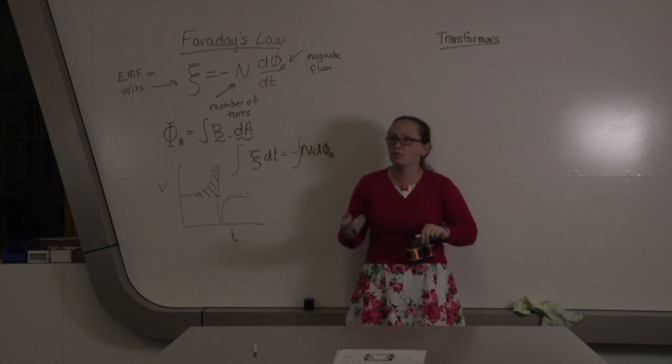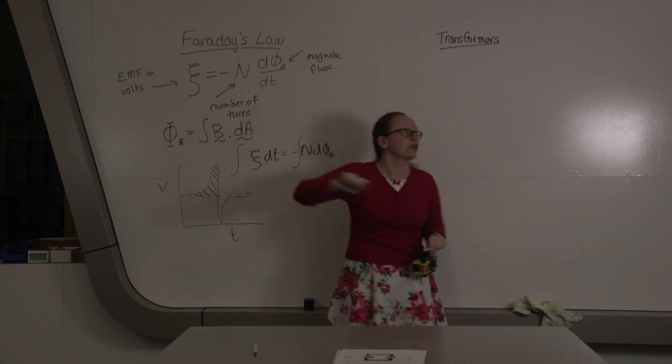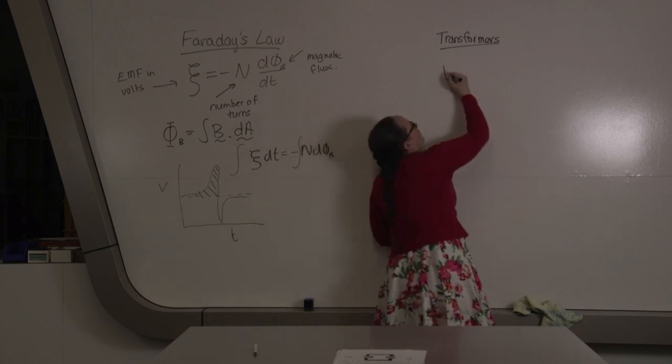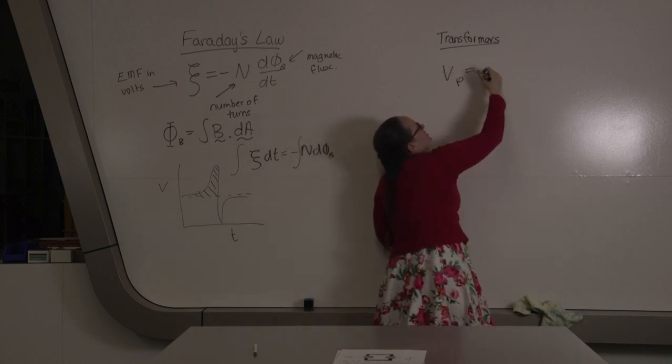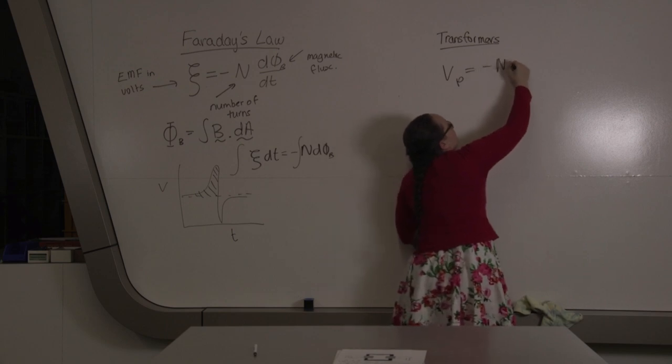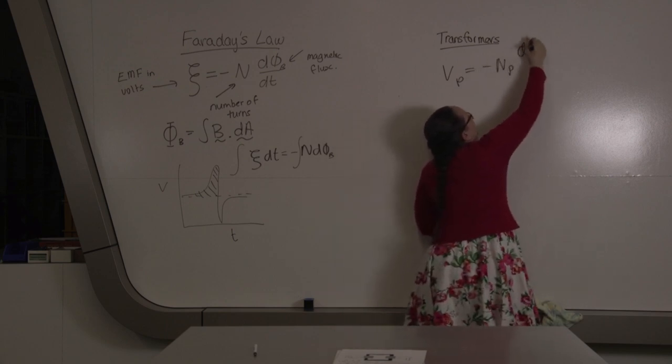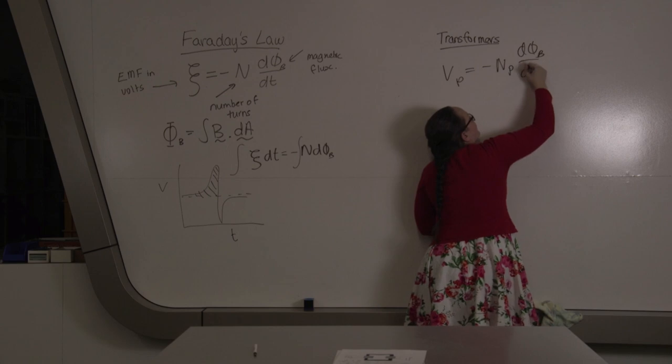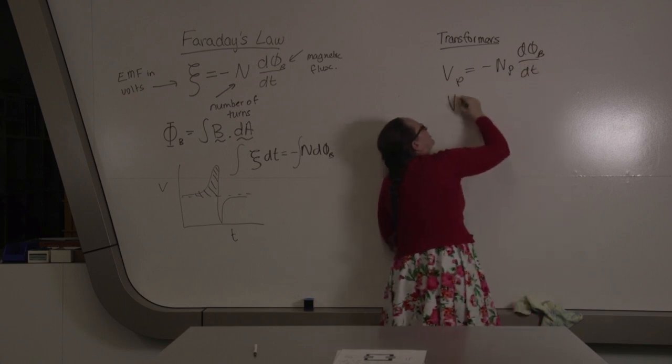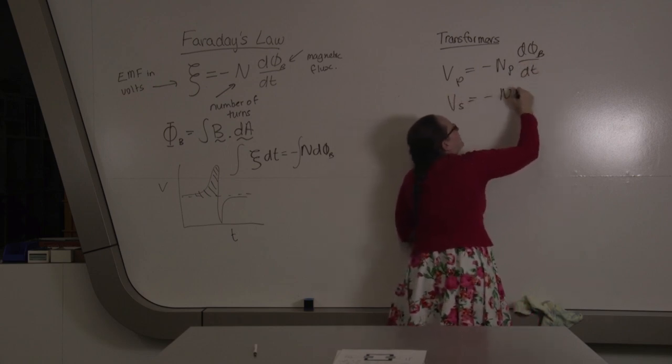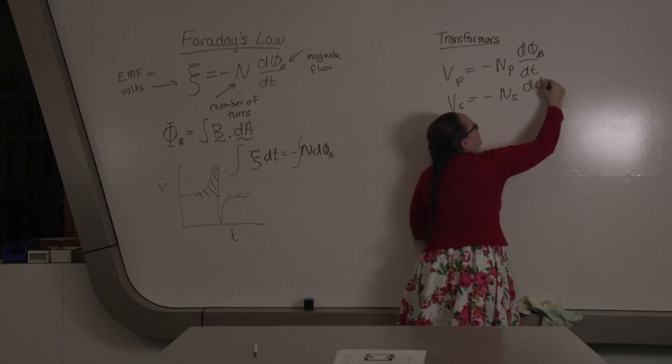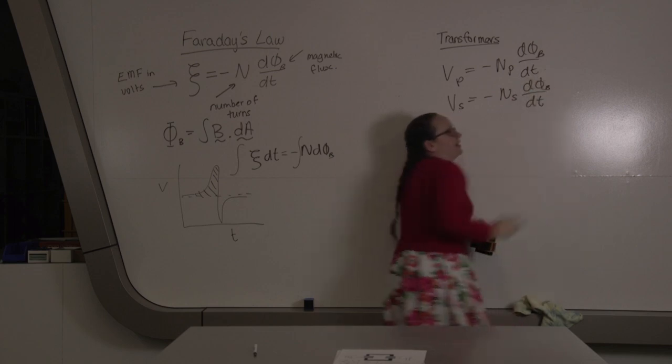We can work out what that relationship is using Faraday's law. In the primary coil, the voltage is given by minus n_p times dφ_b/dt. And in the secondary coil, we've got minus n_s dφ_b/dt.